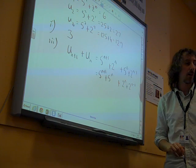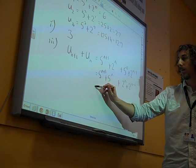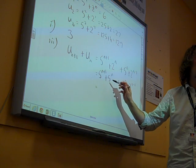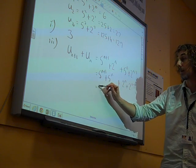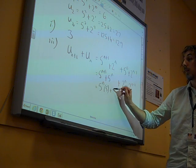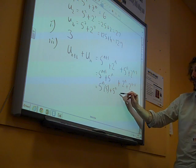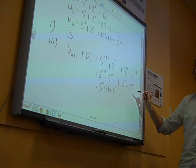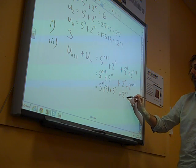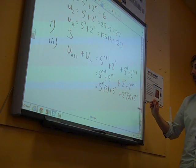Now, these two terms here, we can do some factorising for these, can't we? This here has a common factor of 5 to the n. In fact, what I'm going to do before I write that, I'm going to write that as 5 to the n times 5, and that's 5 to the n.